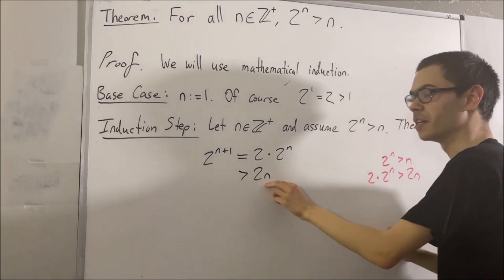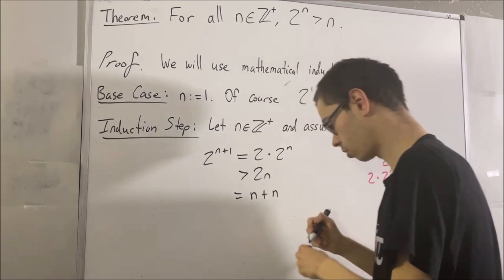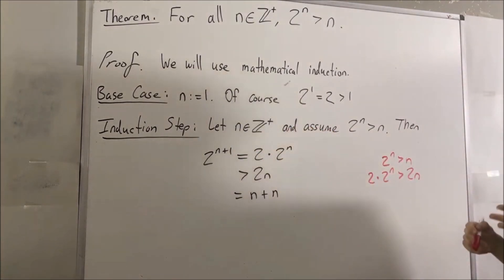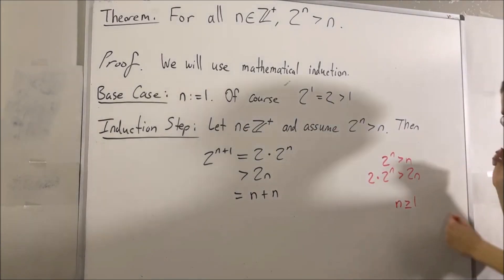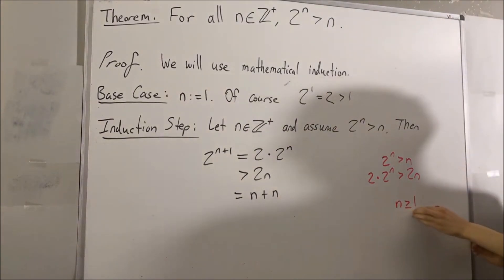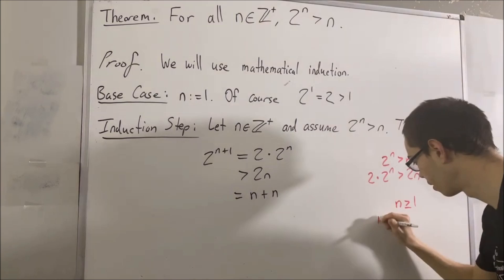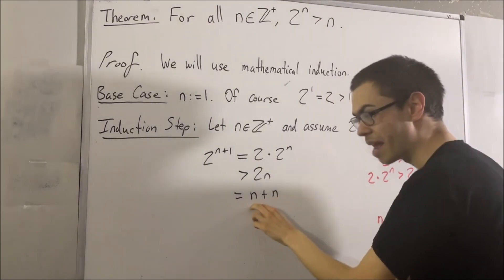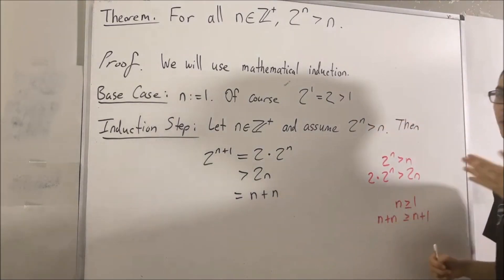But 2n is really just n plus n. And since n is a positive integer, that means n is greater than or equal to 1. Therefore, if we add n on both sides of this inequality, we get n plus n is greater than or equal to n plus 1. So really, we can write n plus n is greater than or equal to n plus 1.